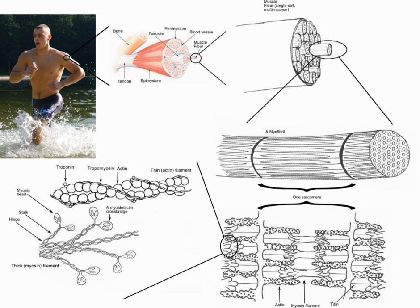The muscular system consists of all the muscles present in a single body. There are approximately 650 skeletal muscles in the human body, but an exact number is difficult to define. The difficulty lies partly in the fact that different sources group the muscles differently and partly in that some muscles, such as palmaris longus, are not always present. A muscular slip is a narrow length of muscle that acts to augment a larger muscle or muscles. The muscular system is one component of the musculoskeletal system, which includes not only the muscles but also the bones, joints, tendons, and other structures that permit movement.